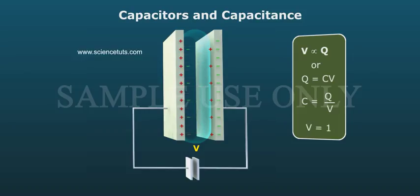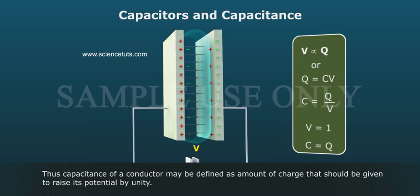If V equals 1, then C equals Q. Capacitance of a conductor may be defined as amount of charge that should be given to raise its potential by unity.